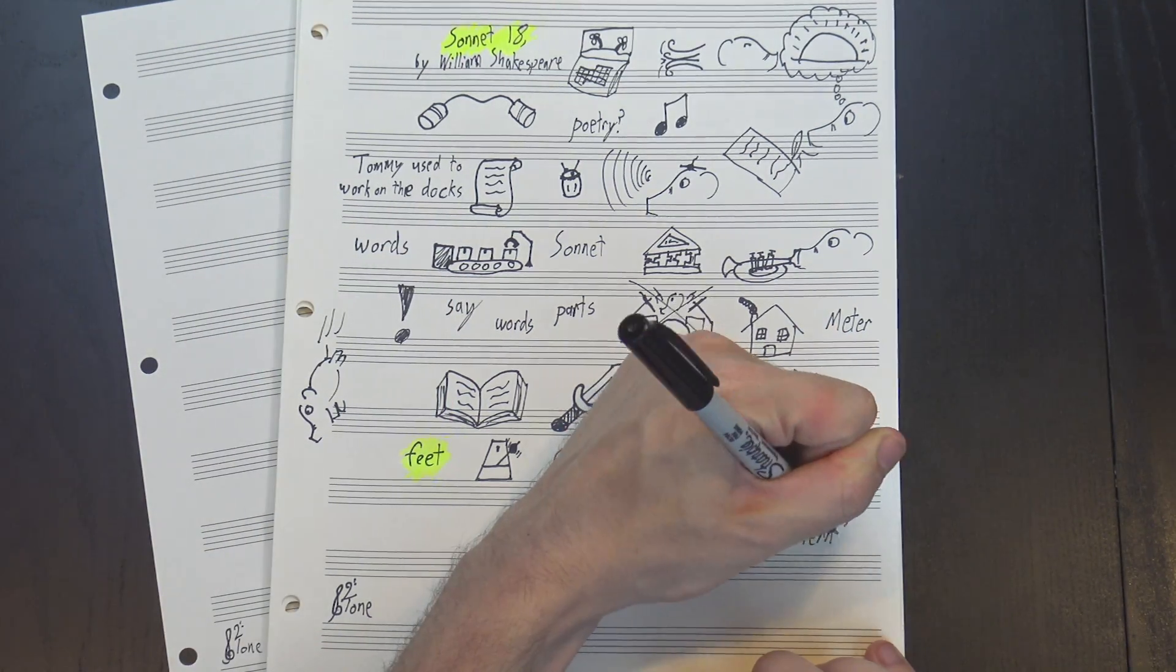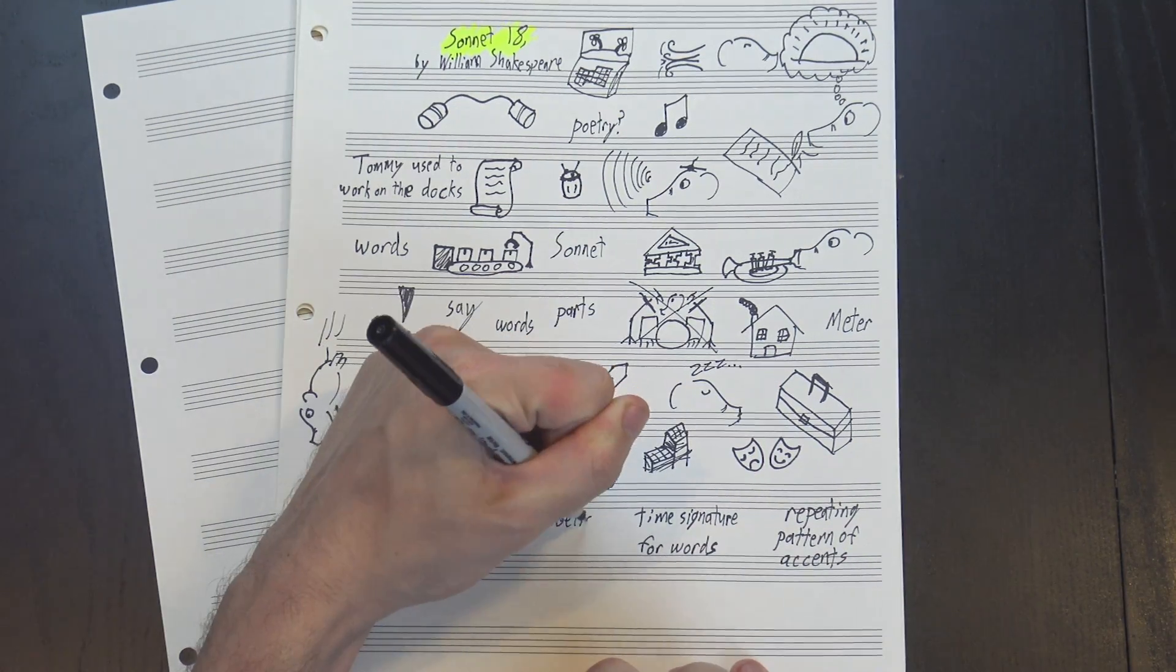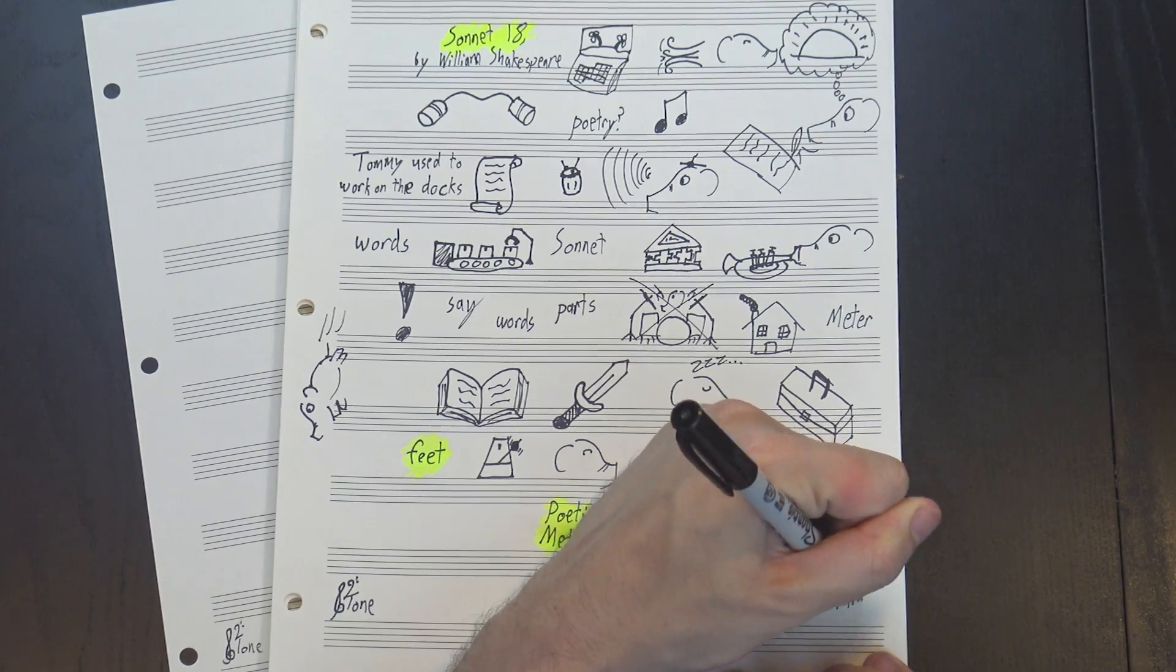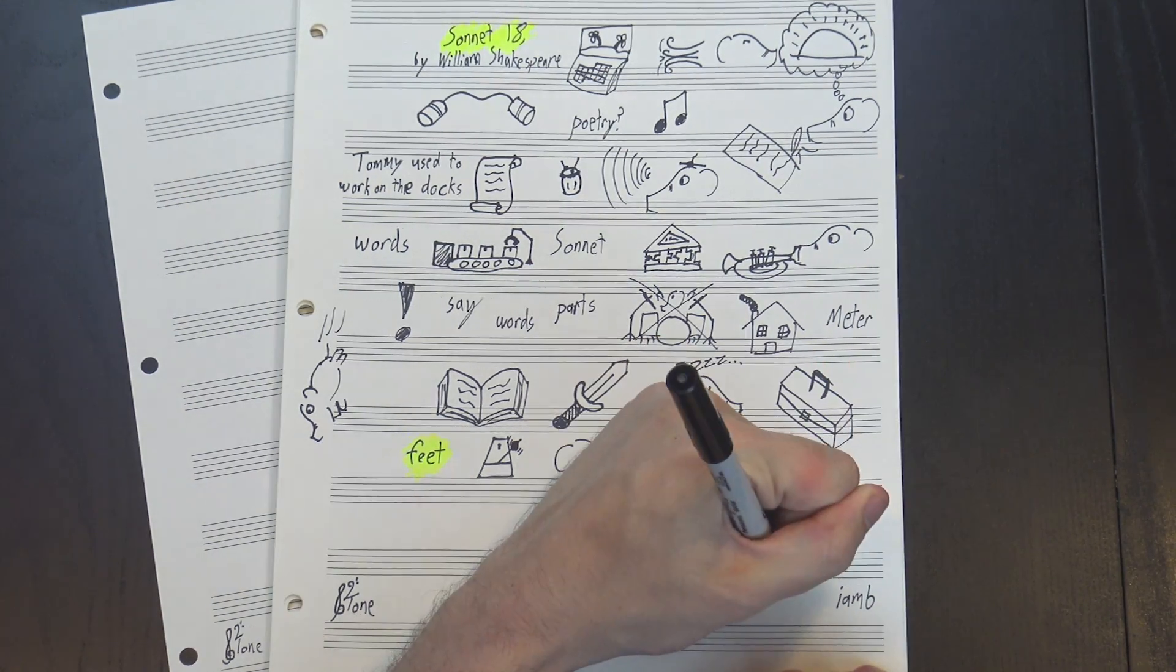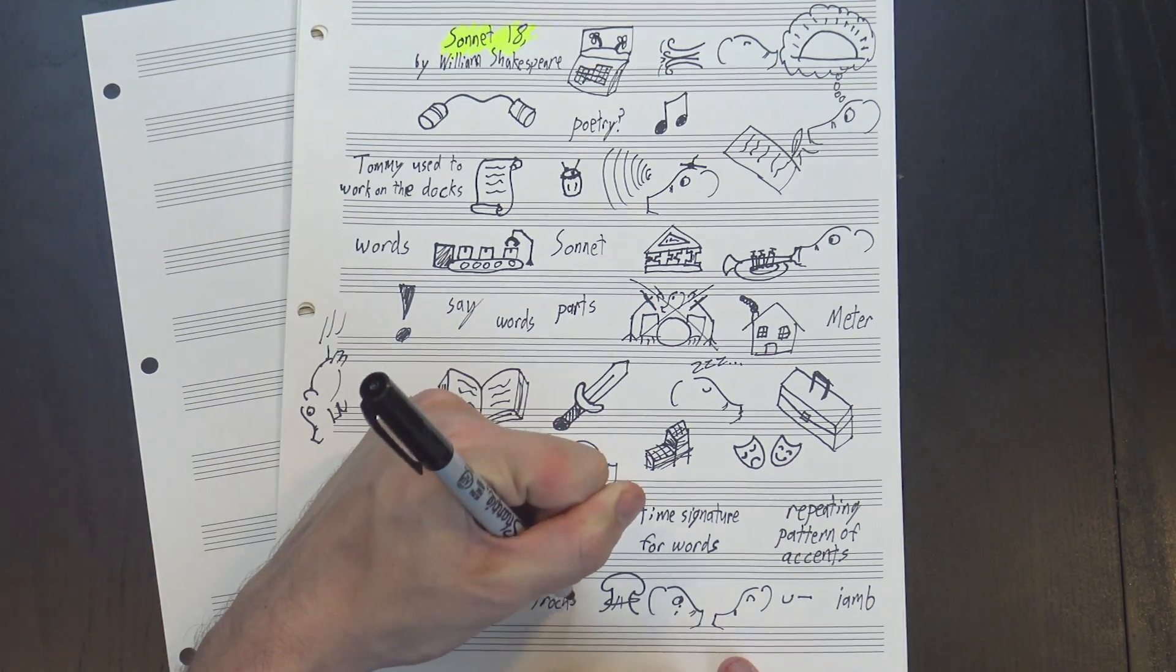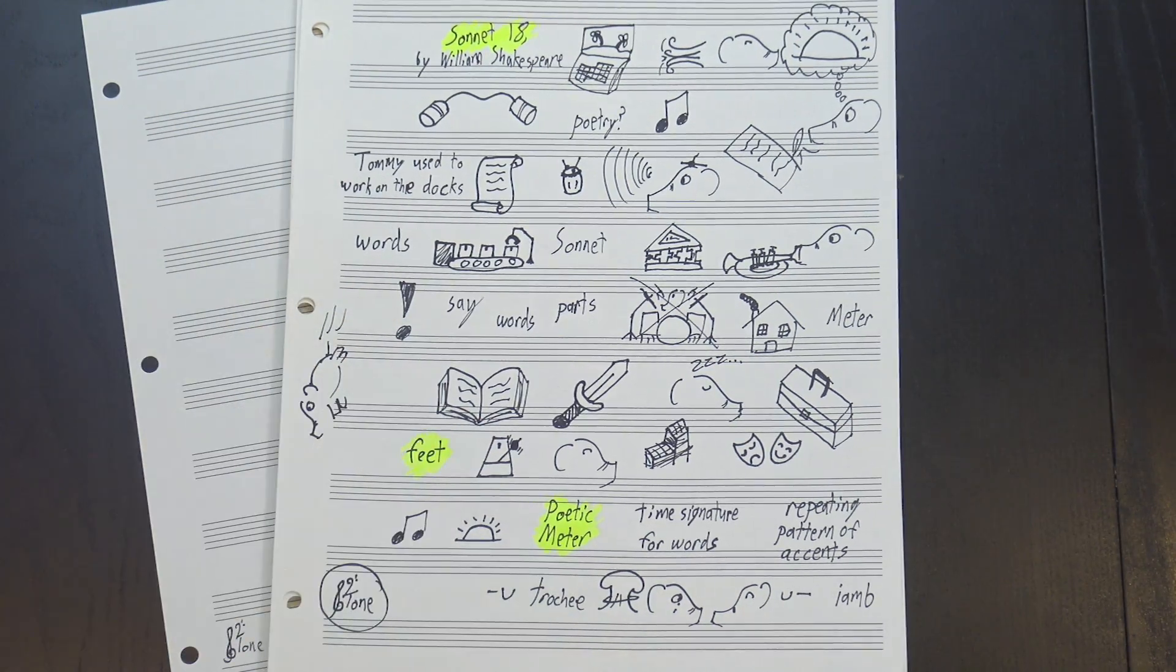A foot is a short, repeating pattern of accents, almost like a time signature, but for words. There's lots of different kinds, and we've covered them before, but the important one for our discussion of sonnets is the iamb, which is two syllables with the accent on the second one, like hello, goodbye, or explode. Compare those to the other main two-syllable foot, the trochee, which puts the stress syllable first, like summer, music, or twelve tone.